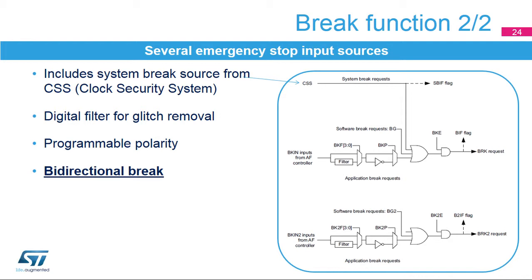Multiple brake sources can be combined for triggering a brake event, including a system-level source such as the clock security system indicating external clock failure, or brake inputs selected via the alternate function controller. External sources can be conditioned with polarity selection and a digital filter for spurious glitch rejection. The BKIN and BKIN-2 pins are open-drain bidirectional IOs, allowing output of an internal brake event outside the MCU, useful when multiple components such as MOSFET gate drivers share the same brake signaling lines.